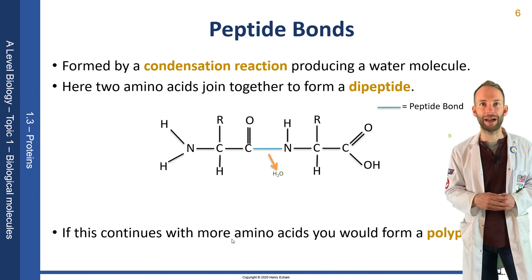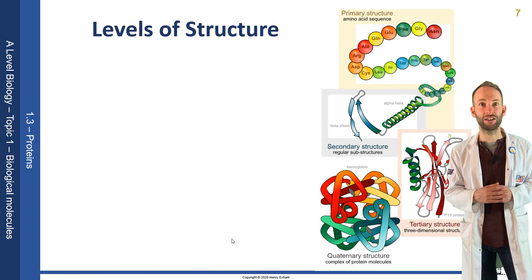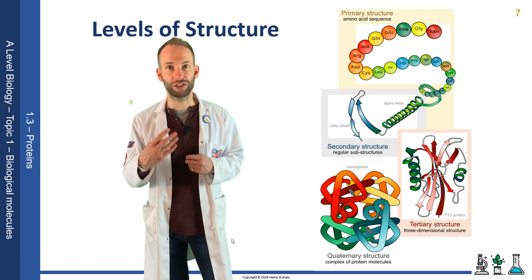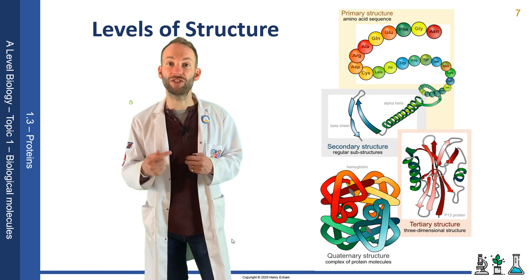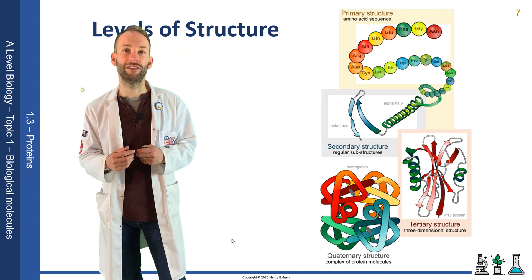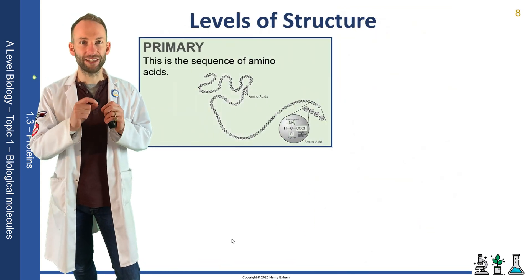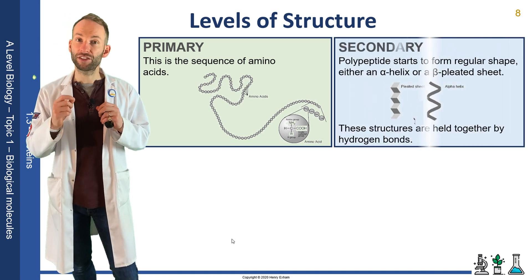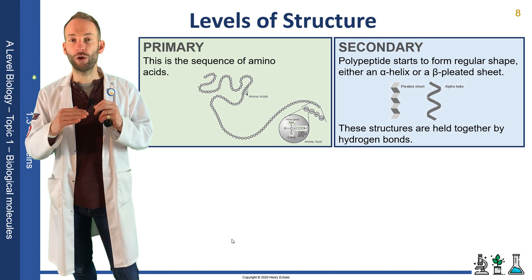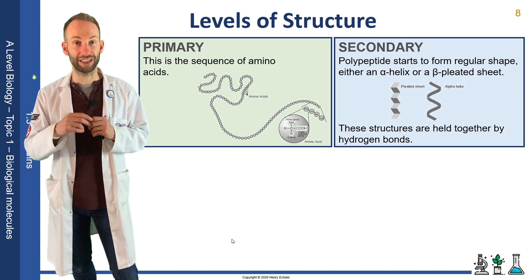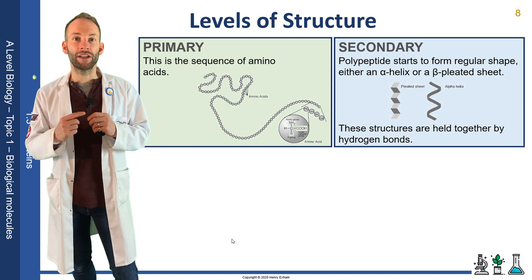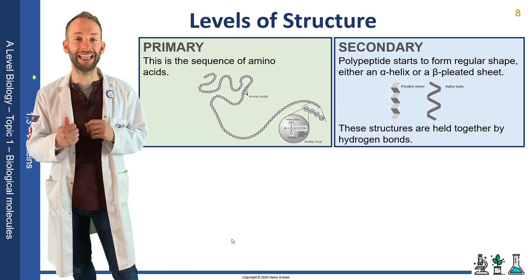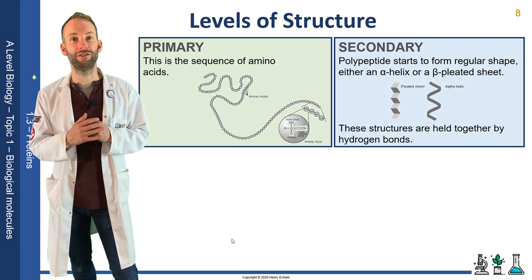Once you form this polypeptide, which can be hundreds of amino acids long, it then gets folded up into a 3D structure. We describe that in four stages: primary, secondary, tertiary, and quaternary structure. The primary structure is literally just the order — the sequence of amino acids. The secondary structure is when those start folding slightly; they can fold into two shapes at this point: an alpha helix or a beta-pleated sheet. Both of these are formed using hydrogen bonds.